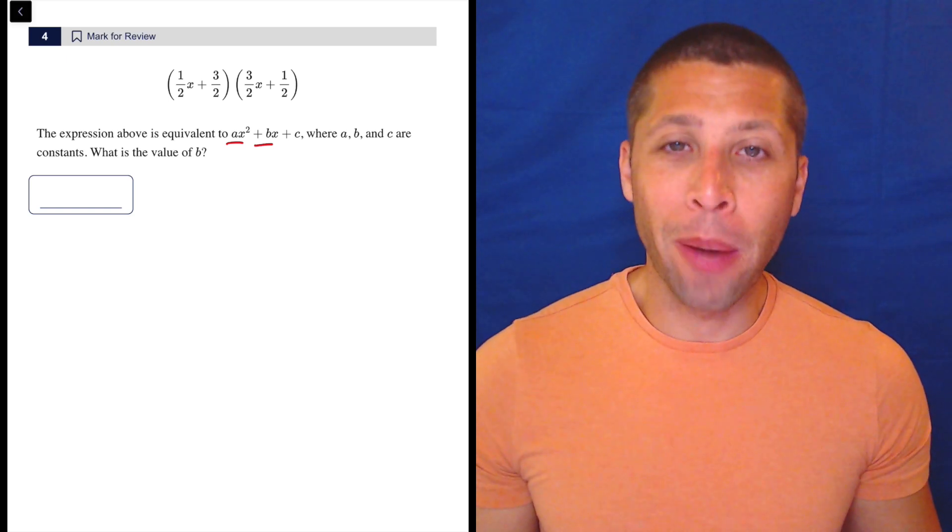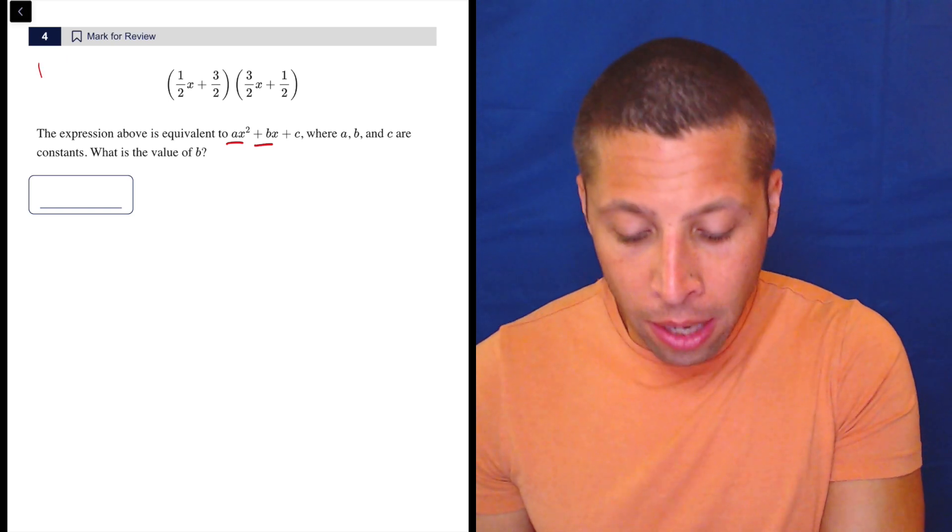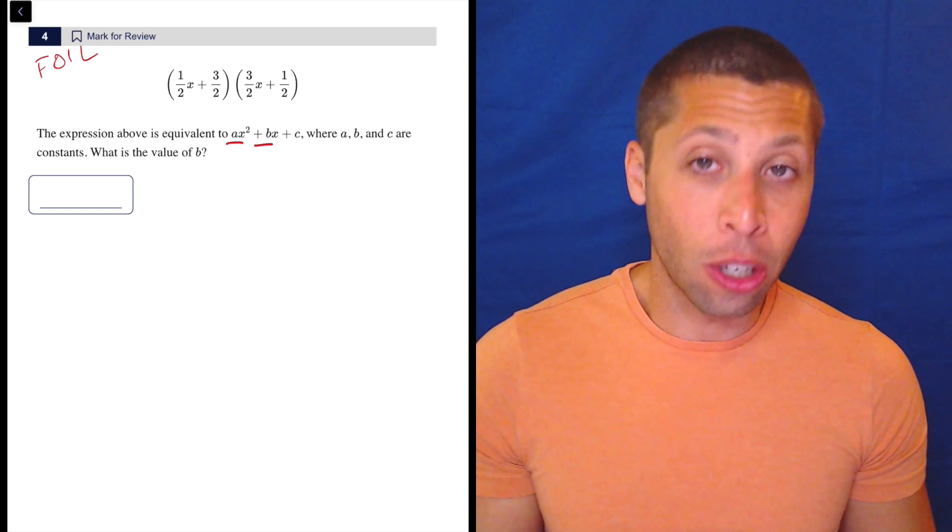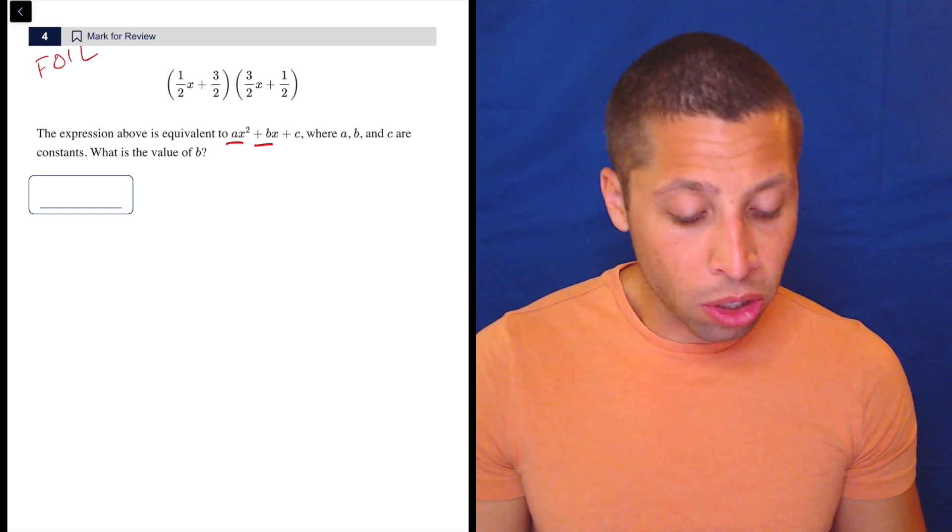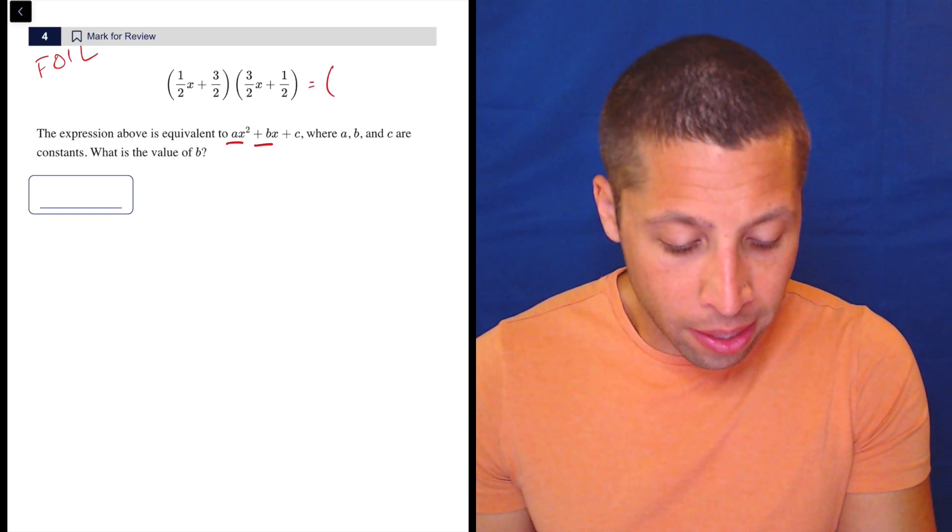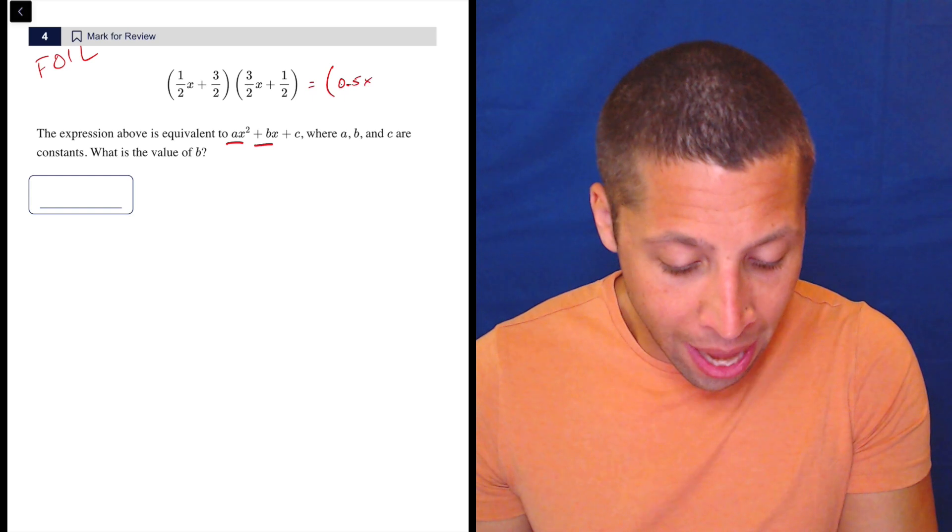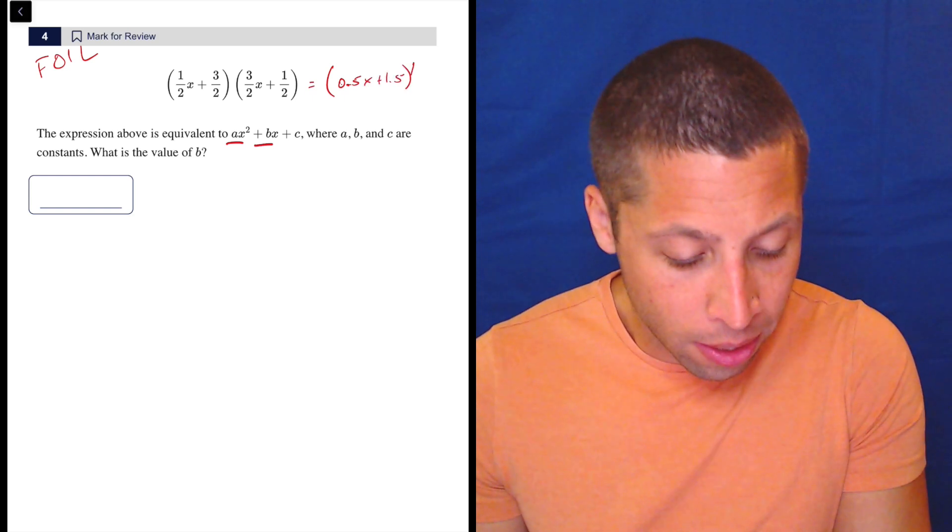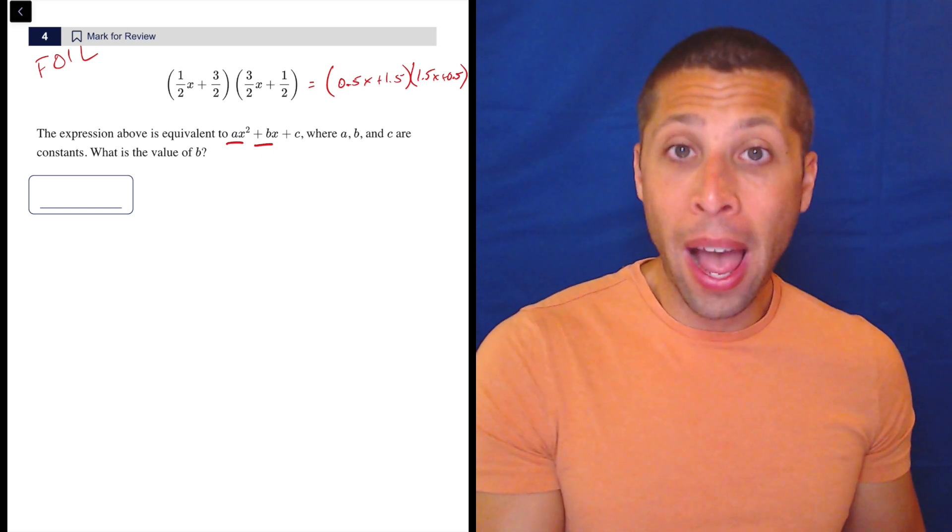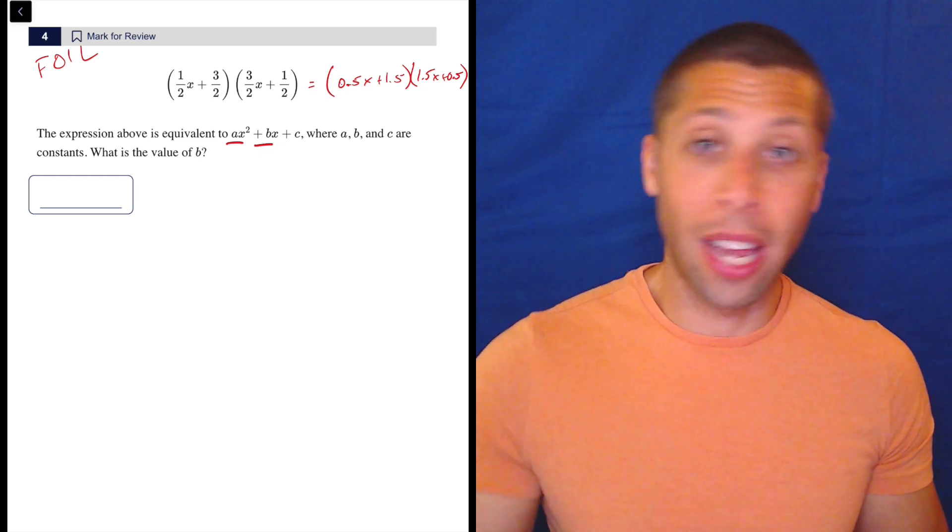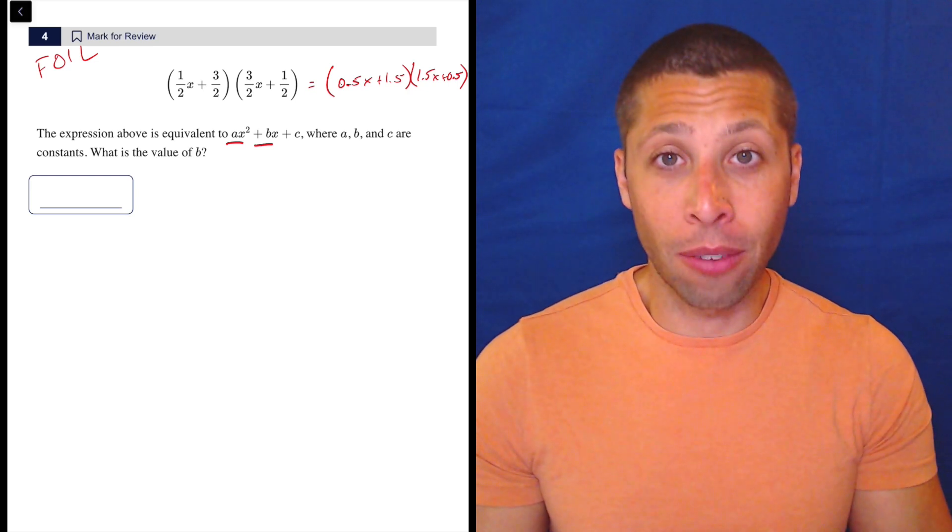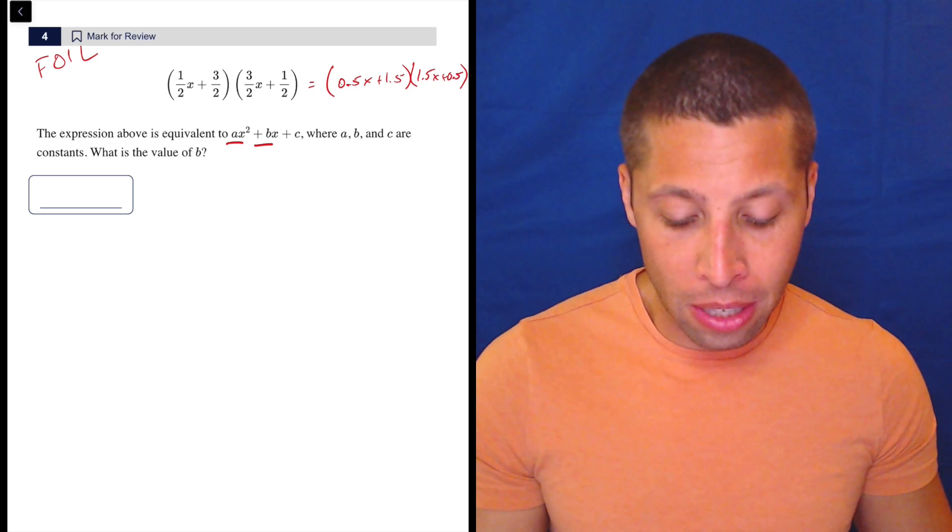Many of you are bothered by fractions and we need to foil here. Do you want to foil with fractions? Personally, that doesn't bother me. But if it does bother you, just convert to decimals and foil from there. You could say this is 0.5X plus 1.5 times 1.5X plus 0.5. You can use Desmos or a handheld calculator. I'm going to foil using fractions because I think fractions are easier to work with than decimals.